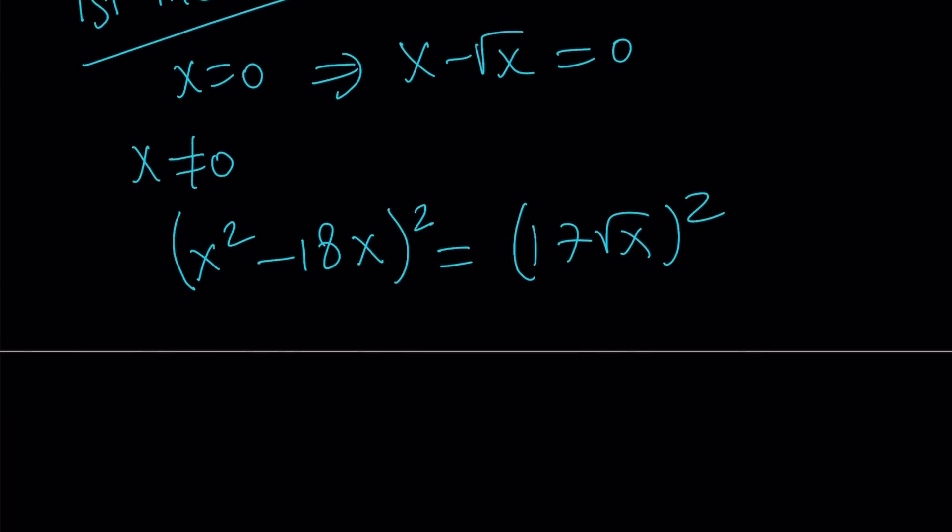When we square what's on the left-hand side, we get x to the fourth power minus 36x cubed plus 324x squared. And on the right-hand side, we get 289x.